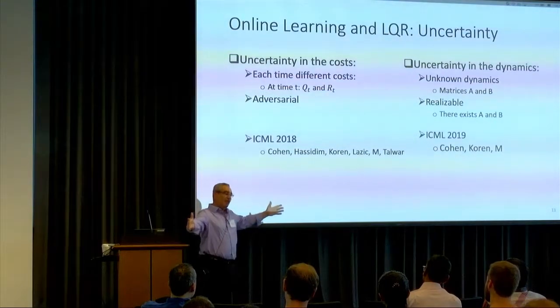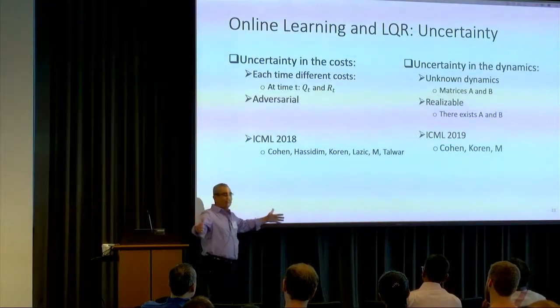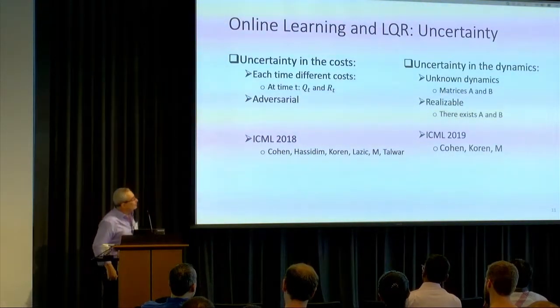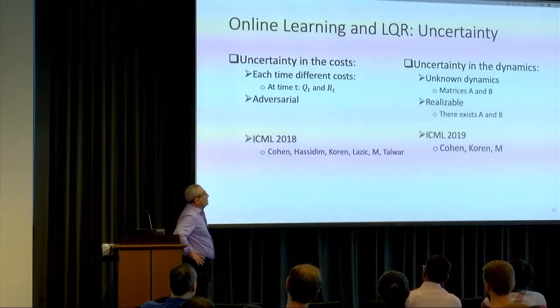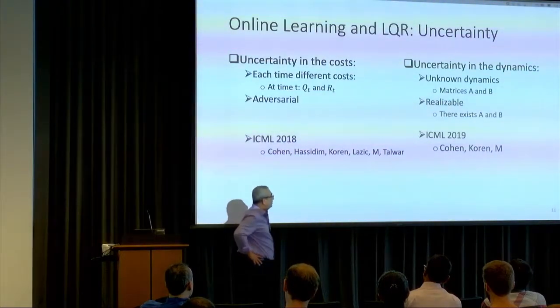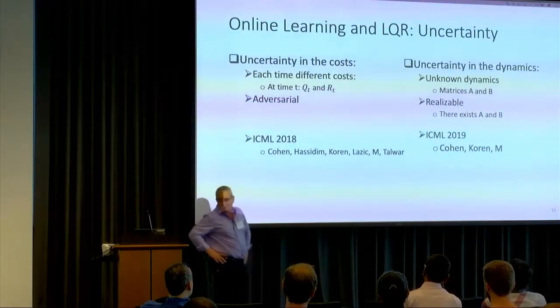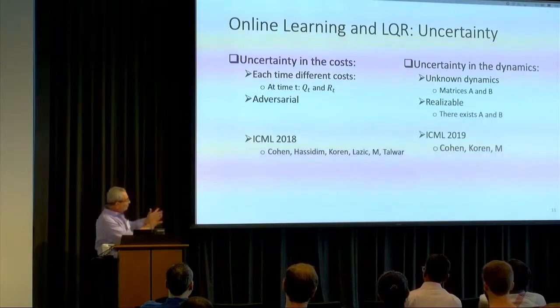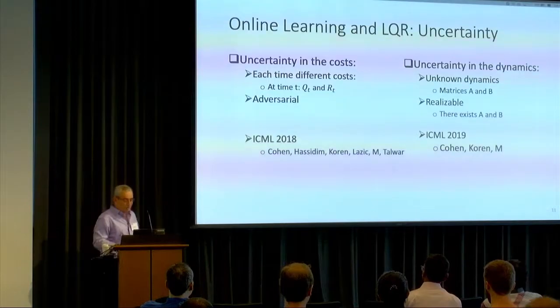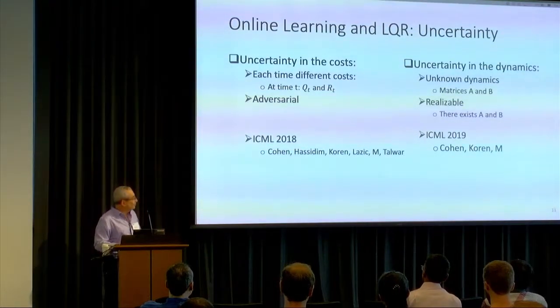In both cases, I'm thinking about a large T-step horizon, large because I want to ignore constant and small-size effects. The other interesting case is what happens when you have uncertainty in the dynamics — unknown matrices A and B. We look at the realizable case where there is a set of matrices A and B describing the dynamics. This is recent work from the last ICML.